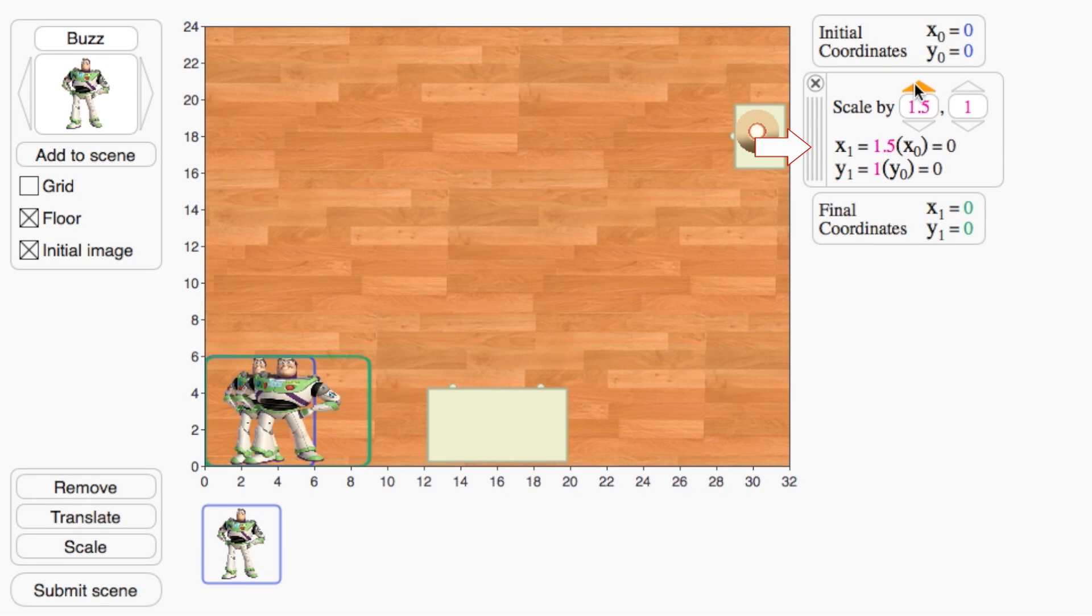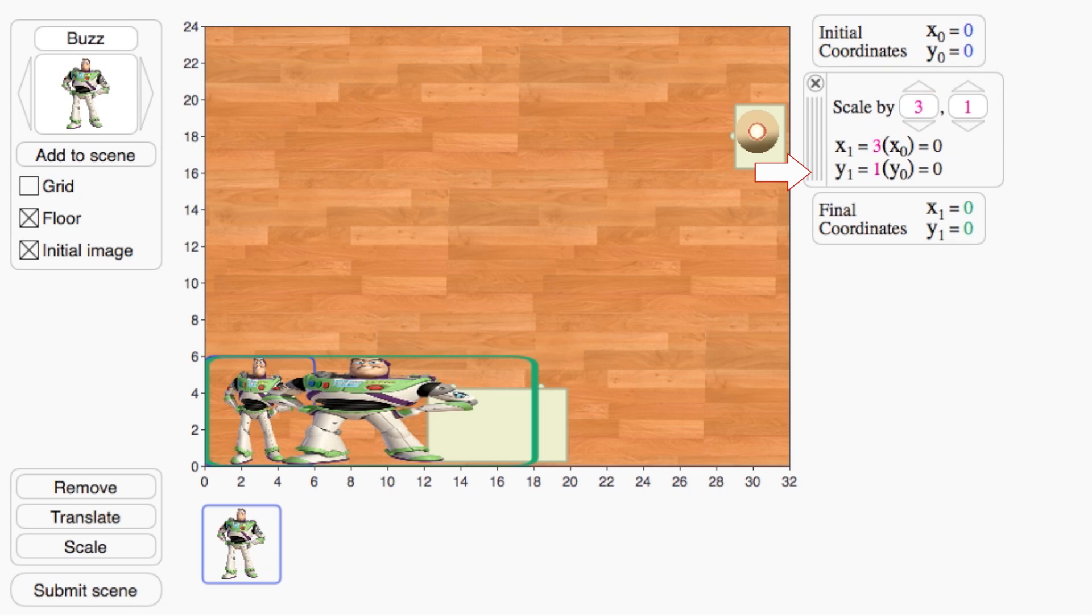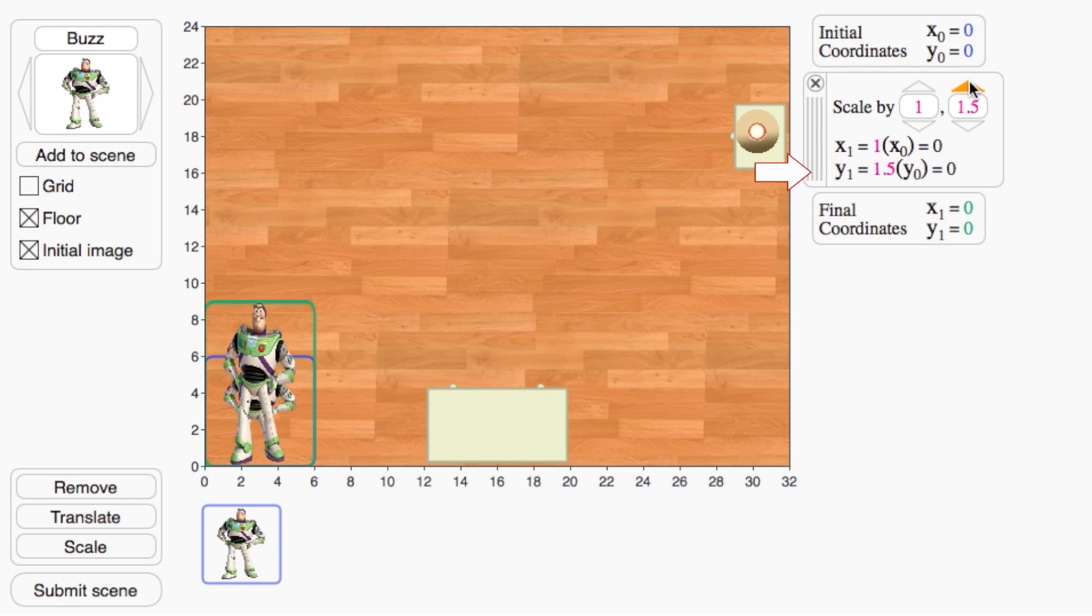If the scaling factor in x is bigger than the one in y, I stretch the object out horizontally. Think about what would happen if the y factor is bigger than x. Also, think about what would happen if s is negative.